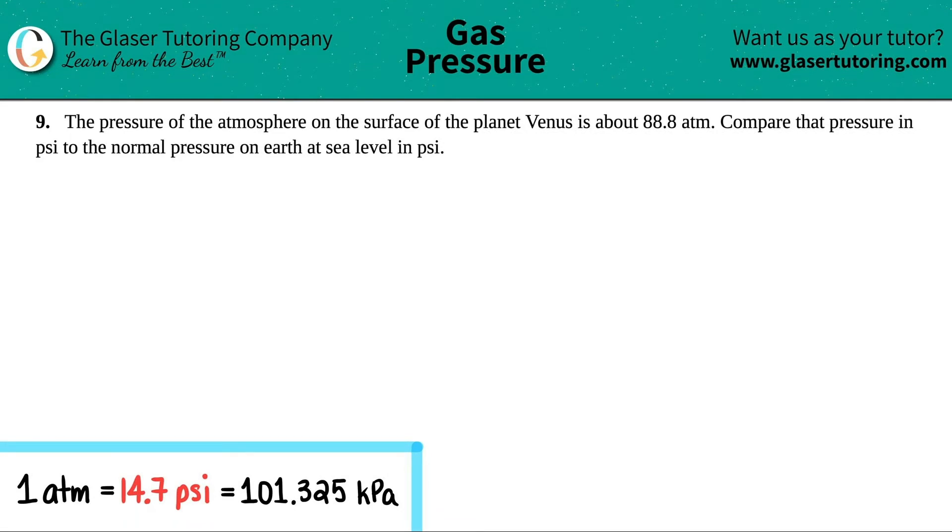Number nine, the pressure of the atmosphere on the surface of the planet Venus is about 88.8 atmospheres. Compare that pressure in PSI to the normal pressure on earth at sea level in PSI.